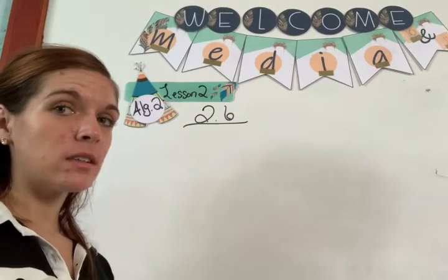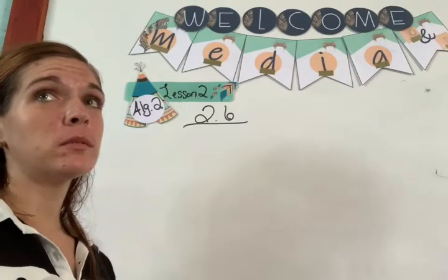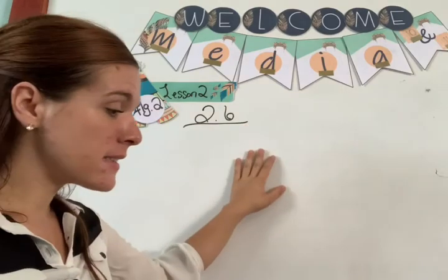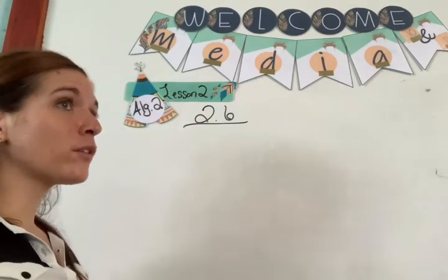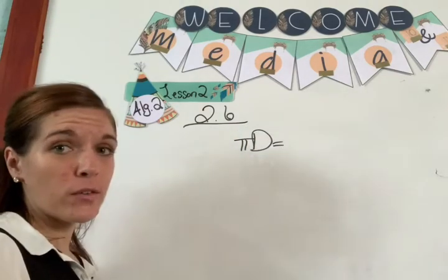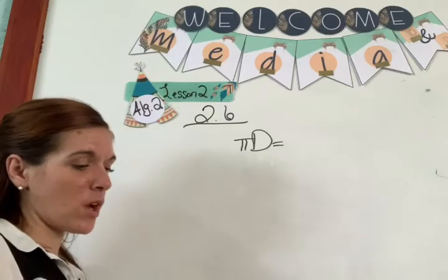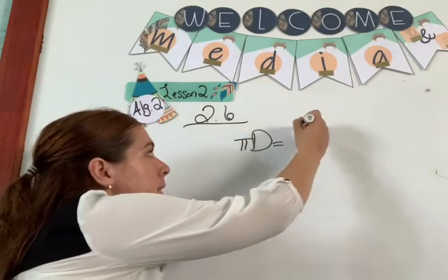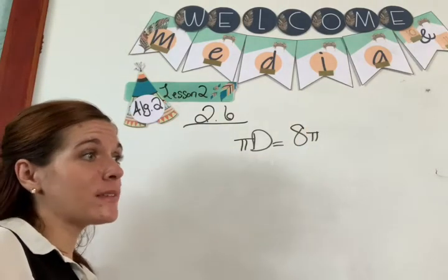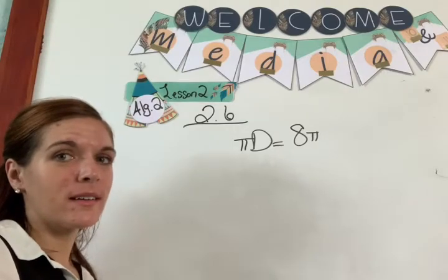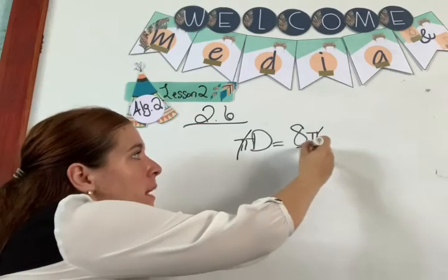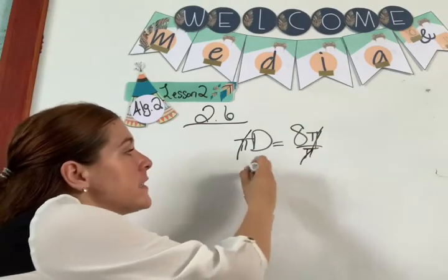What do you do first? If it says the circumference of a circle is 8 pi, you write your formula first. Pi D — that's the formula for circumference. So pi D equals 8 pi. You can cancel out your pi on both sides — or divide by pi, same thing — and your D equals 8.